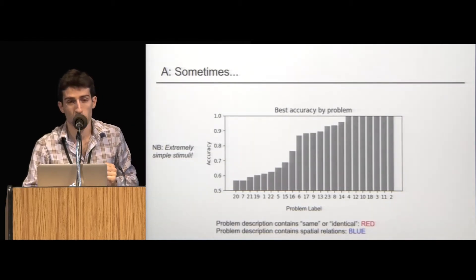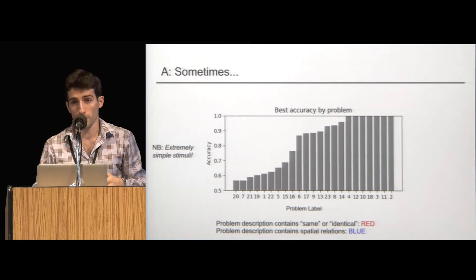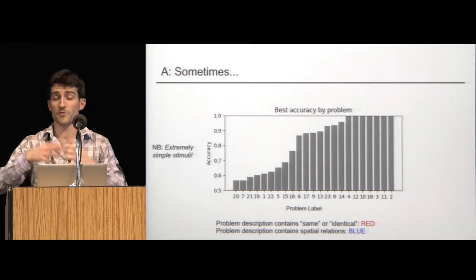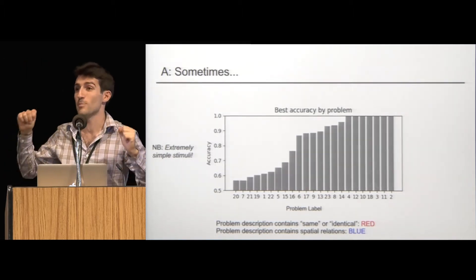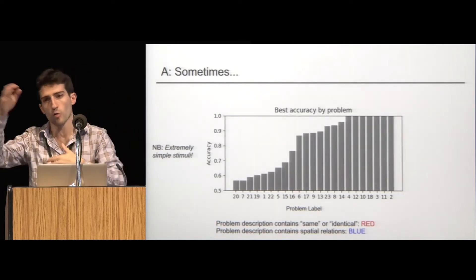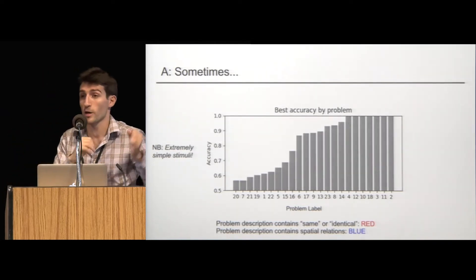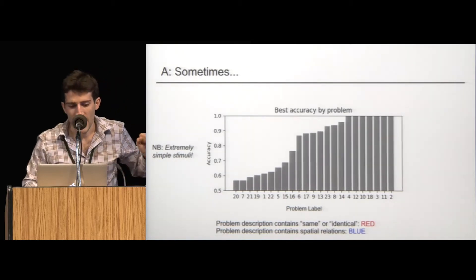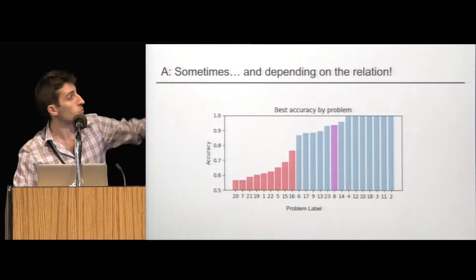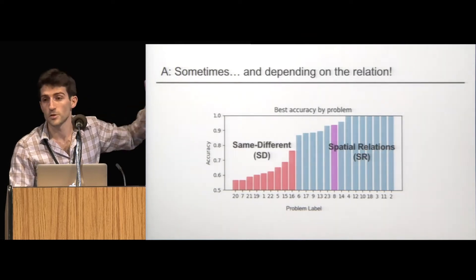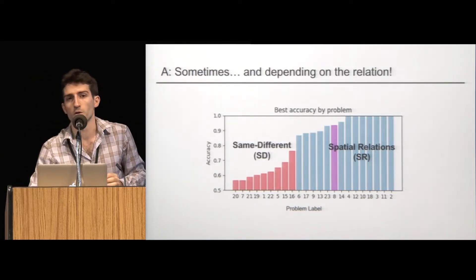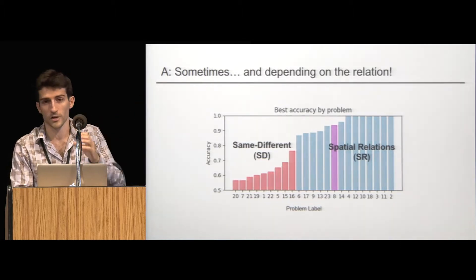But I think there's something else we can glean from this. And we'll do it by the following procedure. We're going to consult the problem descriptions provided by the original authors. And every time the problem description contains a word like same or identical, in other words, if it's a problem which two image regions must be compared, it's a same-different problem, we're going to color the bar red. And every time the problem description contains a spatial word like left, right, inside, something like that, every time a spatial relation must be detected, we're going to color the bar blue. And so that refines the answer to our question. It's not just sometimes, but it's sometimes and depending on the relation.